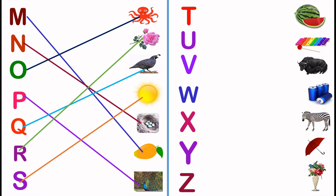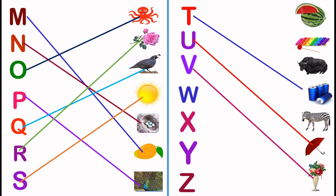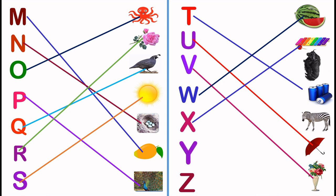Let's match. T, T for tin. U, U for umbrella. V, V for vase. W, W for watermelon. X, X for xylophone. Y, Y for yolk. Z, Z for zebra.